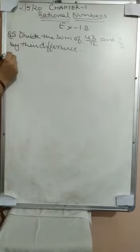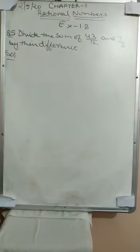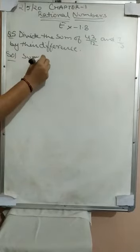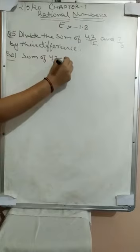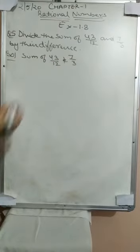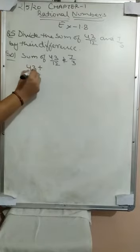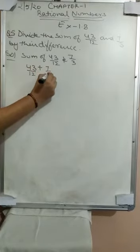So what we are going to do — our first step would be, we have to sum up these two terms. Sum means add. Sum of 43/12 and 7/3. So we write: 43/12 plus 7/3.